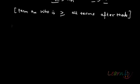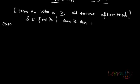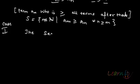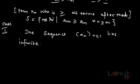We define the set S of natural numbers such that a_m is greater than or equal to a_n for all n greater than or equal to m. You can have two cases: one case where this set S is finite, and another where this set S is infinite — that is, the sequence has infinitely many dominant terms.